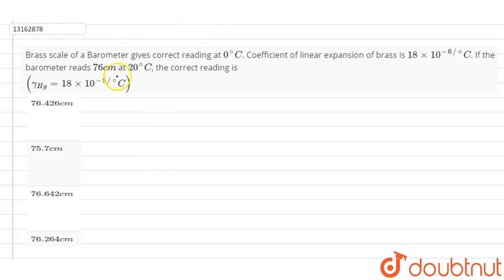We can write that the correct reading, or true value, will be equal to the scale reading of the barometer, which will be 76 cm times 1 minus gamma minus alpha into delta T.